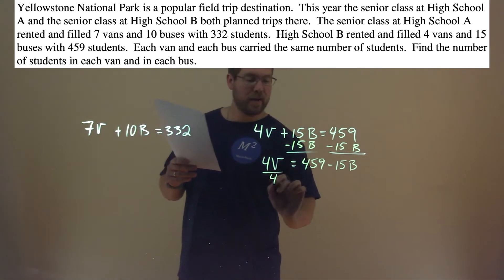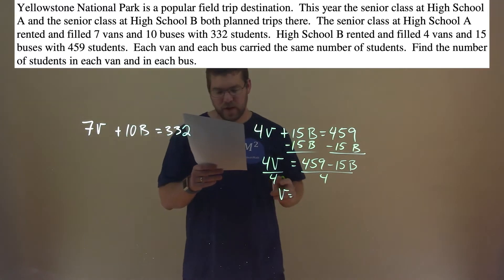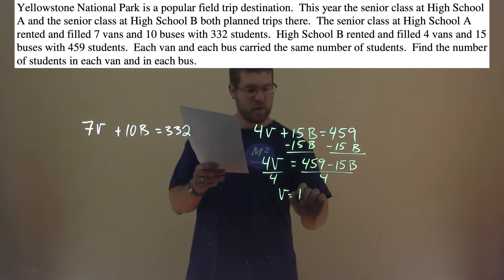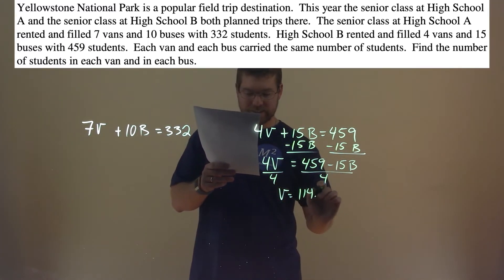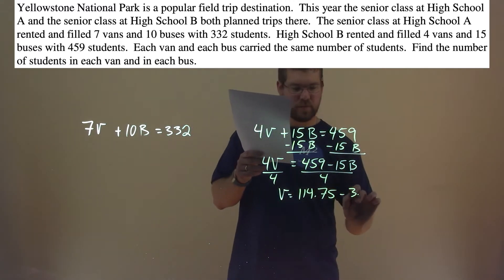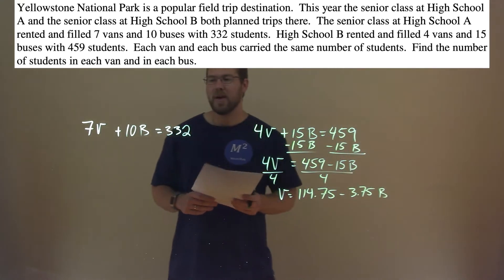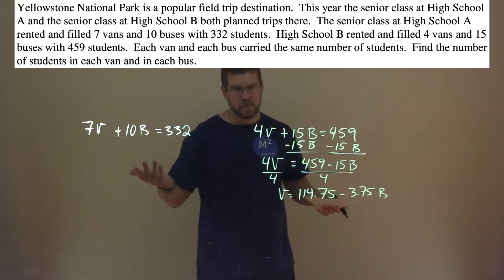Divide both sides by 4 here, and v equals 459 divided by 4, which is 114.75, minus 15 divided by 4, which is 3.75b. Don't be afraid of the decimals. Same process as always, just with decimals.